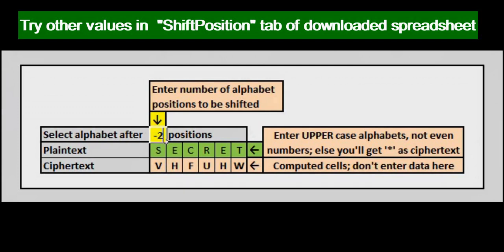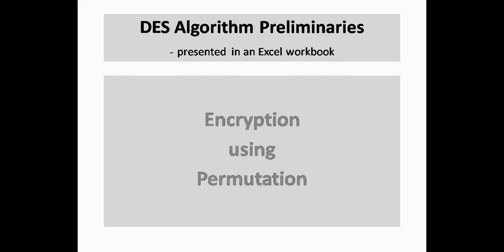Enter minus 2 in the same box and the ciphertext shifts to the left. Alphabet Q is 2 positions to the left of S and so on. But this is still not very secure. If we can guess the vowels then recovering the remaining is easy.